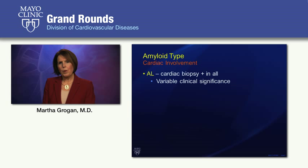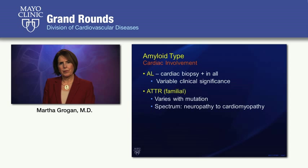Regarding cardiac involvement: in AL amyloidosis, a cardiac biopsy will be positive in almost all cases, though the significance is of variable importance. In transthyretin cardiac amyloidosis, the familial type, cardiac deposition varies tremendously with mutations — some forms present almost exclusively as neuropathy, while others are almost exclusively cardiomyopathy.